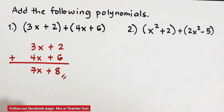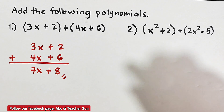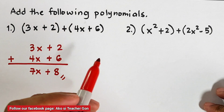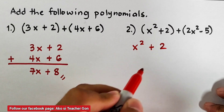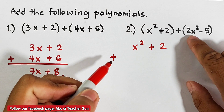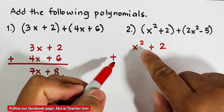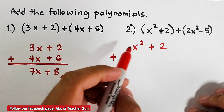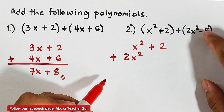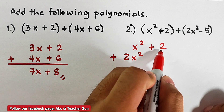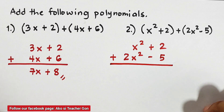Now let's continue with item number 2. We have two polynomials: (x² + 2) + (2x² − 5). First, we copy the first polynomial: x² + 2. Then we align the second polynomial under it — 2x² is aligned under x² because they are like terms, having the same variable and exponent. The constant −5 is aligned under the constant 2.